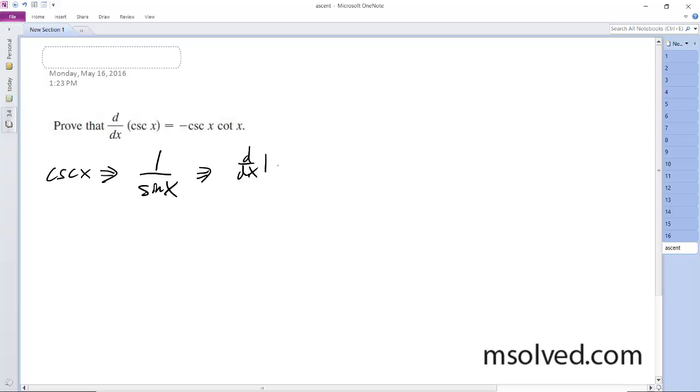So in this case, d/dx of 1 times sine of x minus 1 times d/dx of sine of x, and then sine squared of x.